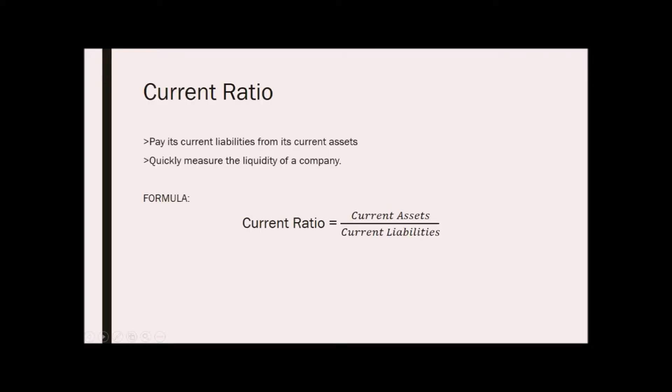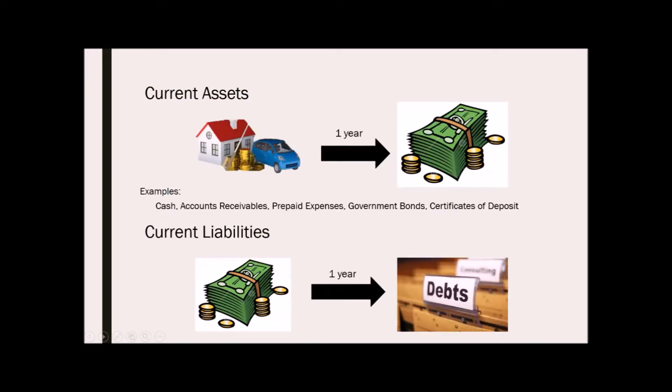Current ratio indicates a company's ability to pay its current liabilities from its current assets. This ratio is one used to quickly measure the liquidity of a company. The formula in solving this is current assets over current liabilities.